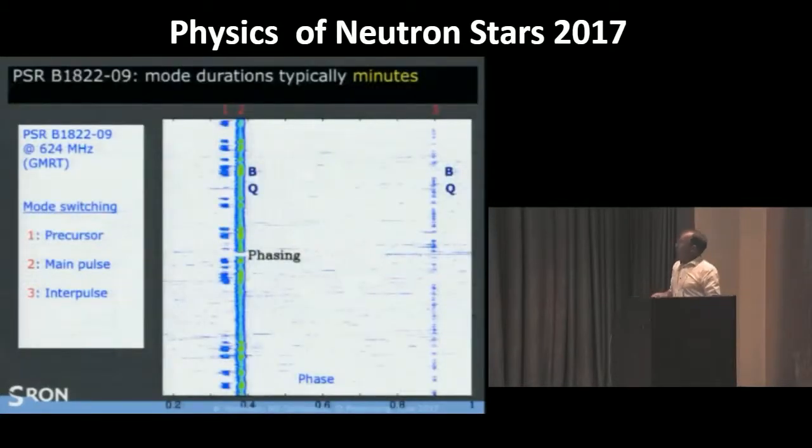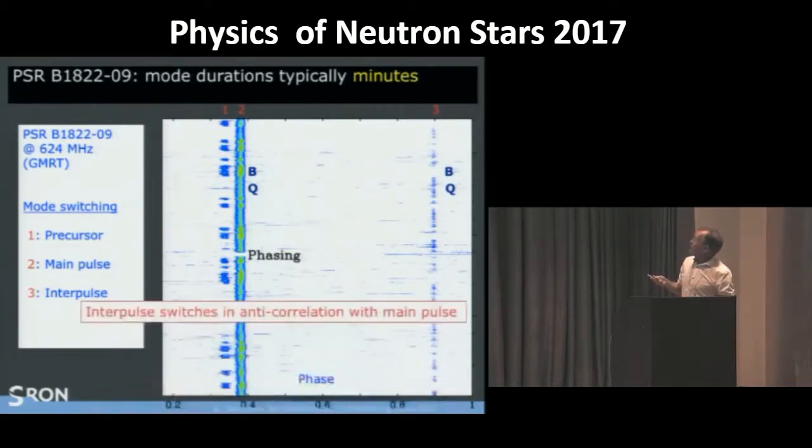For the second pulsar, 1822-09, you see there is a main pulse and an interpulse. That leads us to the assumption that it is an orthogonal rotator, we see both pulses. There is a precursor as well. We see the main pulse is moding from a bright mode to a quiescent mode. The interesting thing is that here the interpulse is moding in anti-correlation. When the main pulse is bright, it is off. When the main pulse is quiet, it is on. And that was already discussed in many papers. How do the two poles know of each other that they mode at the same time in anti-correlation? There is no explanation yet.